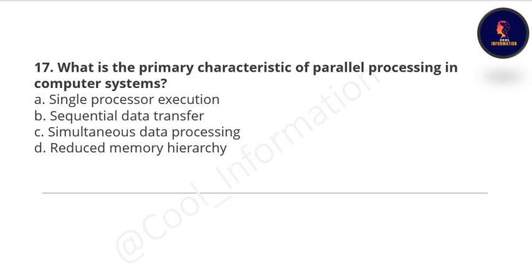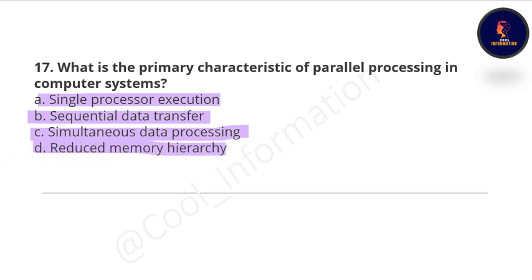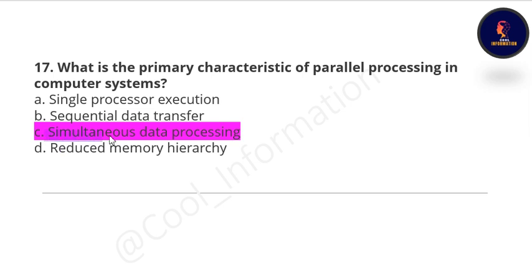Question 17: What is the primary characteristic of parallel processing in computer systems? Option A: single processor execution, Option B: sequential data transfer, Option C: simultaneous data processing, Option D: reduced memory hierarchy. The correct option is simultaneous data processing.